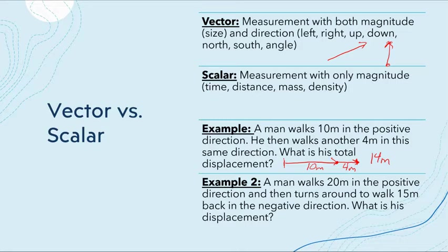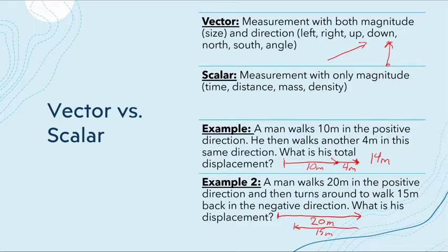In our next example, a man walks 20 meters in the positive direction, then turns around and walks back 15 meters. What is his resultant? You go from the tail of the first to the head of the last — 20 minus 15 gives you a total of 5 meters.